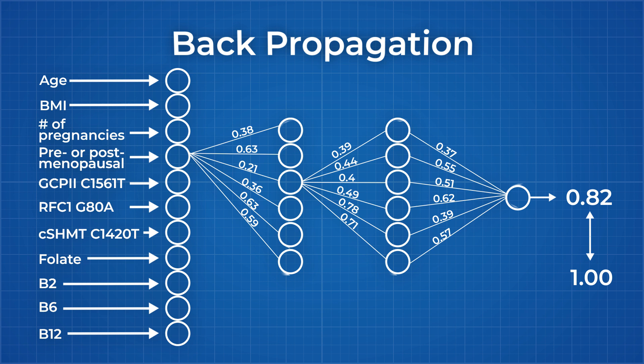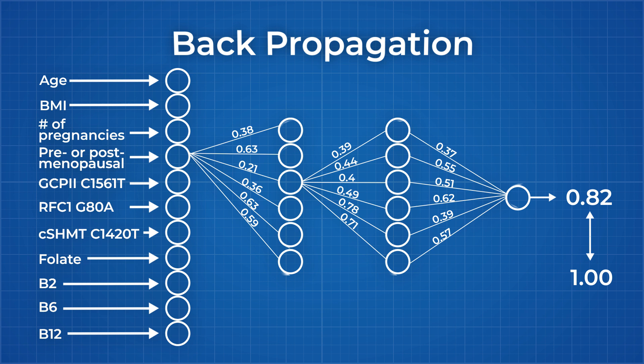It's a process that is used to move the network toward the lowest possible error in its output. Gradient descent is the backbone of neural networks, and is the most used learning algorithm in machine learning.